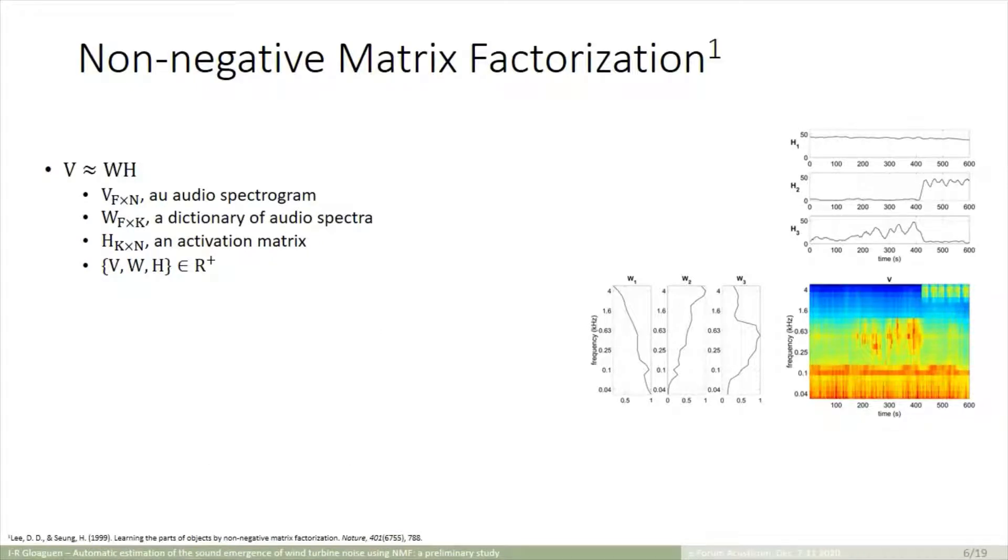In the audio domain, NMF consists in approximating an amplitude spectrogram of an audio signal, V, by the product of two matrices, W and H. W is called a dictionary composed of K audio spectra, so in the example here we have three elements in our dictionary.